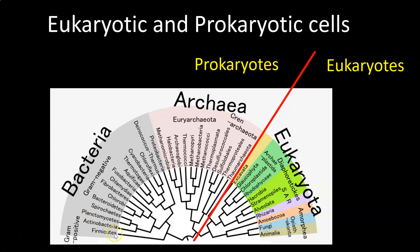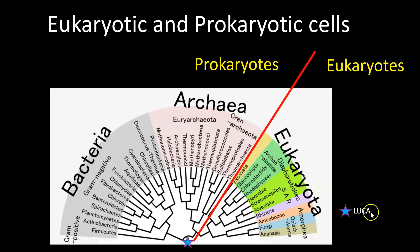What you can also observe is that all three domains of life can be mapped down to one ancestor. This ancestor is sometimes referred to as the Last Universal Cellular Ancestor, or sometimes shortened to LUCA. So all cells are derived ancestrally from this first known cell.